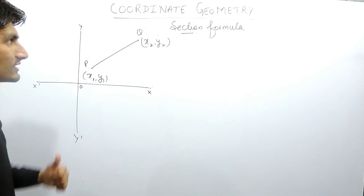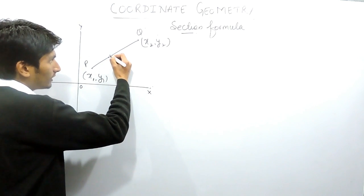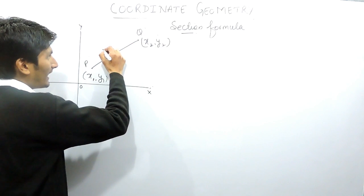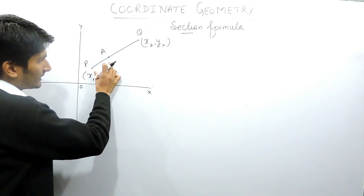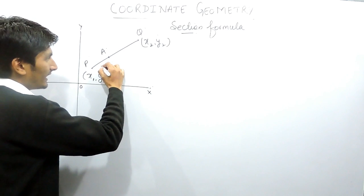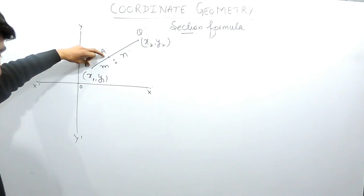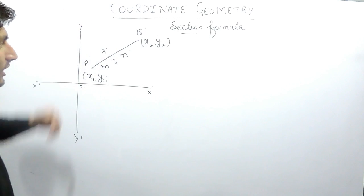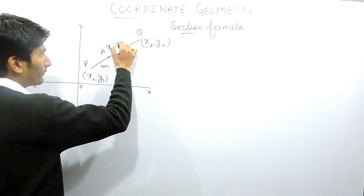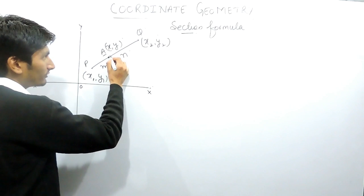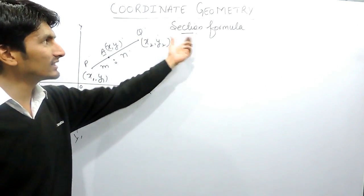The distance formula is something we have already discussed in the previous video. Now, there is another thing: if there is a point on this PQ line called A, this is the point which divides this line in some ratio, say m ratio n. If this distance is m then this distance is n, increasing according to proportion. How will you find the coordinate of this point A? To find out the coordinates of this point, we will use the section formula.